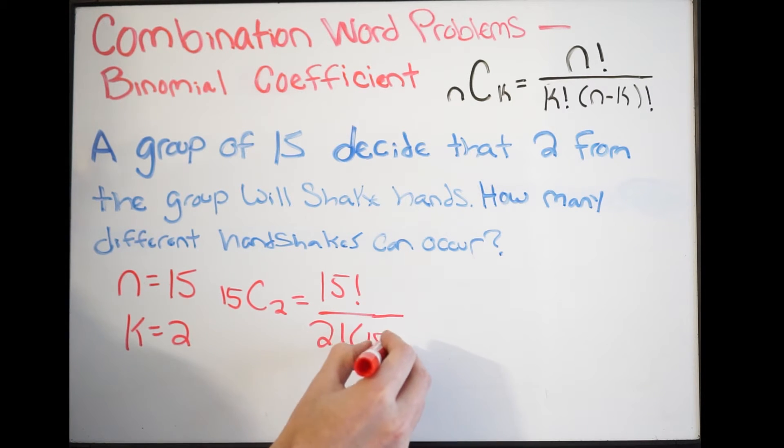This will be 15 minus 2, then factorial. We can rewrite this as 15 choose 2 equals 15 factorial over 2 factorial times 13 factorial.